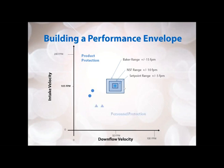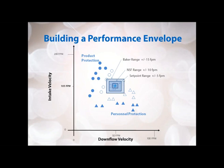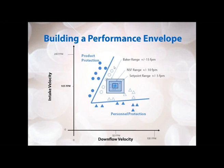Going back to the performance envelope we're building — showing the set point and all the different ranges required for testing, including the set point range, the NSF range, and the Baker range — we can start to plot our test results for product protection and personnel protection. We perform a lot of tests to gather sufficient data showing where failures and passes occur. We also test outside the required ranges just to see how far the cabinet can go. We do want to see some failures, because at the juxtaposition of passing and failing, we can draw lines that tell us where the cabinet's restrictions are — how far out it can go before failing. These lines are your performance envelope.